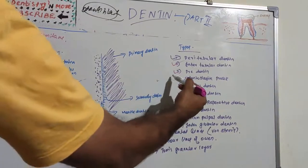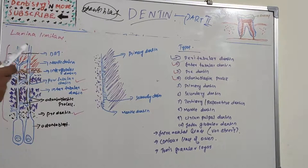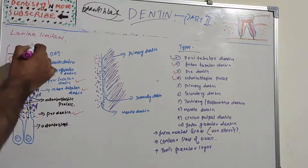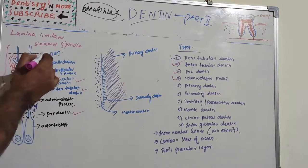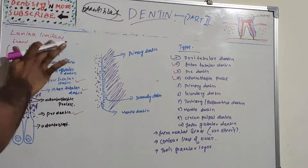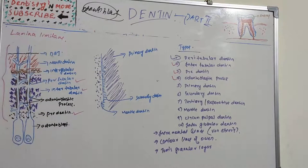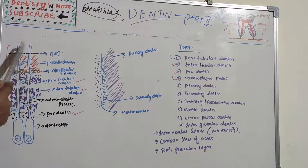Now we have the odontoblastic process, which is the cytoplasmic extension of the odontoblast. The odontoblastic process can enter enamel, and when it crosses the DEJ and ends trapped in enamel it is known as an enamel spindle. Lamina limitans, which we covered earlier, is the organic layer of peritubular dentine. The odontoblast resides in the peripheral pulp at the pulp-predentine border, and the process extends into the dentinal tubules.